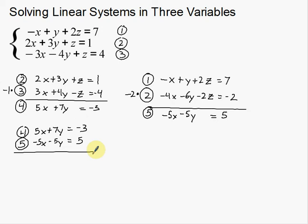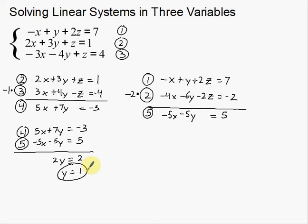Now, adding down the columns to eliminate the x's: I get 0 for x, 7 minus 5 gives 2y, and negative 3 plus 5 gives positive 2. So y is equal to 1. After all that work, I've effectively solved for one of my variables. Now I need to plug y back into one of my equations — I'm going to plug it into equation four and solve for x.